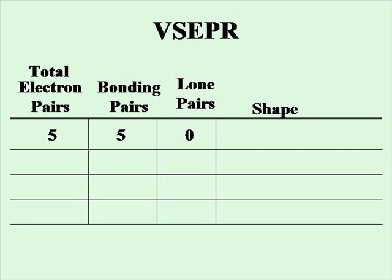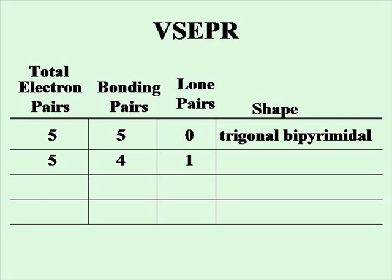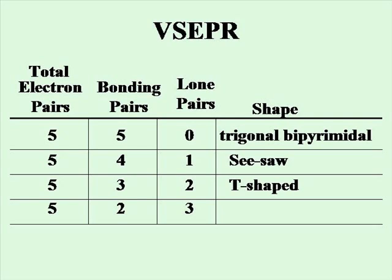Working with five total electron pairs, all five bonded with no lone pairs, will give you the shape called trigonal bipyramidal. If you have five total electron pairs, four bonding and one lone pair, you will have what's called seesaw. Five total pairs, three bonded and two lone pairs, will give you a T-shaped molecular geometry. And five total electron pairs, two bonded and three lone pairs, will give you a linear molecular geometry.